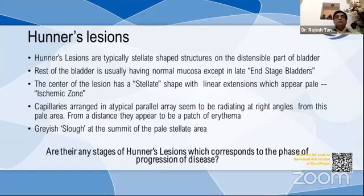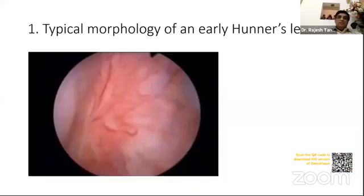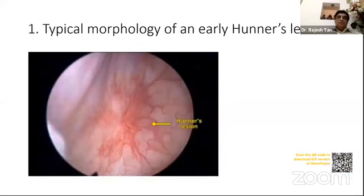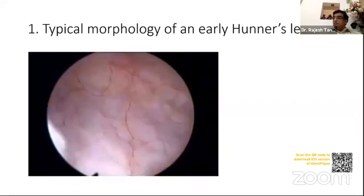Are there stages of Hunner's lesions corresponding to the phase of disease progression? This is a typical Hunner's lesion in an early disease where the rest of the bladder is healthy, compliant, and well distensible.